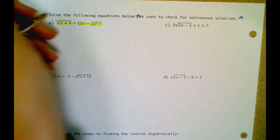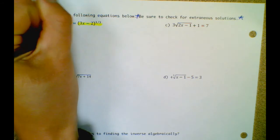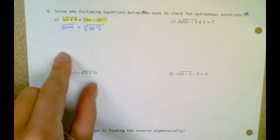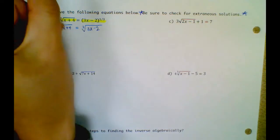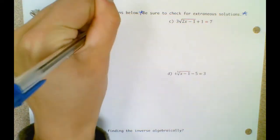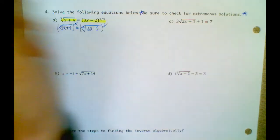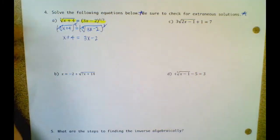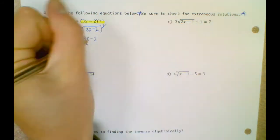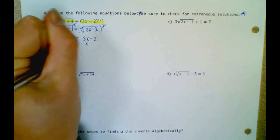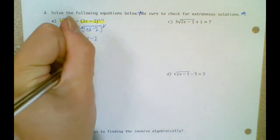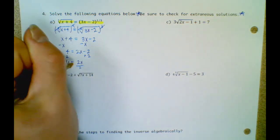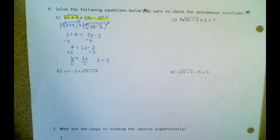This is x plus 4 equals — this is the cube root because it's one-third — 3x minus 2. You can see that you have radicals on both sides. When that happens, the next step is to cube both sides because we're dealing with a cube root, and that cancels out your radical. So I get x plus 4 equals 3x minus 2 because the radical's gone. Then combine like terms: minus x on both sides. I get 4 equals 2x minus 2. Add 2 to both sides: 6 equals 2x. Divide both sides by 2, so x equals 3.